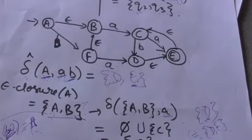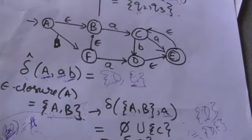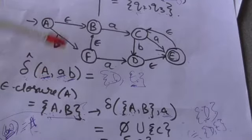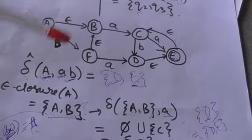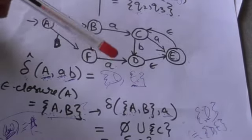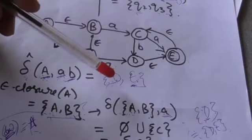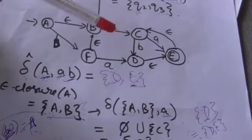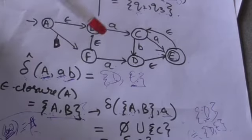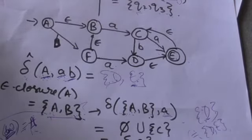If the output of the extended transition function in the case of an NFA with empty transitions for the initial state and a string of input symbols is a set having at least one final state of the NFA, then that string will be accepted by that NFA.